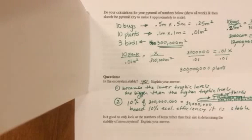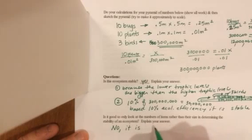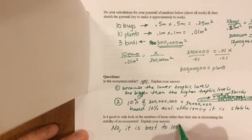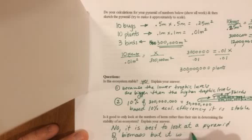So now, is it good to only look at the numbers rather than their size? And the answer is no. It's really best to look at size, but it's much harder to do. So it is best to look at a pyramid of biomass, but it is harder to do.